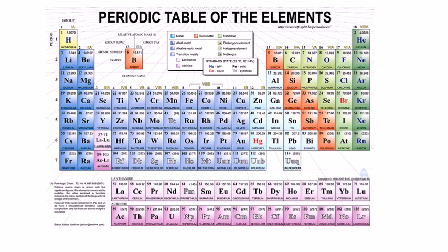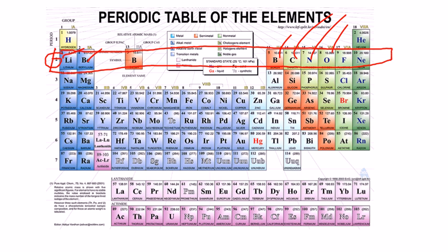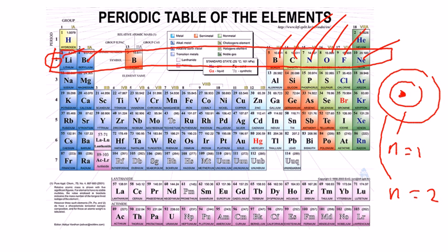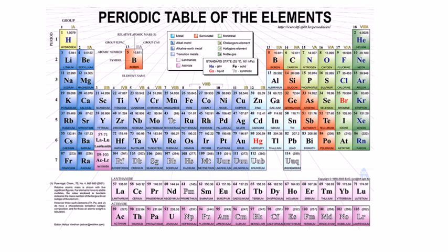However, if we look at period 2, that includes all of these guys here, lithium, beryllium, boron, carbon, nitrogen, oxygen, fluorine, and neon. They all have two shells. So if you can imagine, this is the nucleus, here's my first shell, and here's my second shell. Sometimes we call these n equals 1 and the outer n equals 2. So that's what that's telling us. There are two shells of electrons, and of course the outer shell is the valence shell.